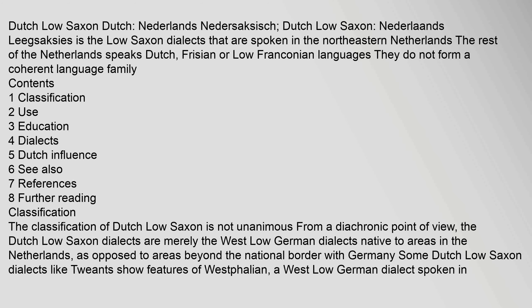Dutch Low Saxon, Nederlands Nedersaxisch, is the Low Saxon dialects spoken in the Northeastern Netherlands. The rest of the Netherlands speaks Dutch, Frisian, or Low Franconian languages. They do not form a coherent language family. The classification of Dutch Low Saxon is not unanimous from a diachronic point of view.